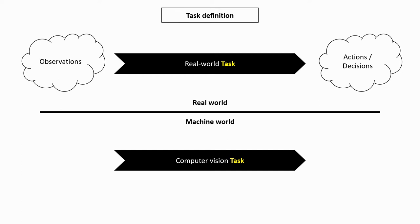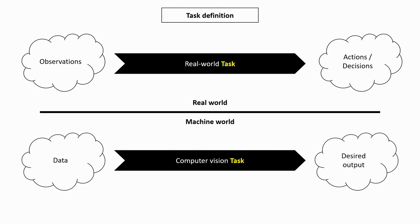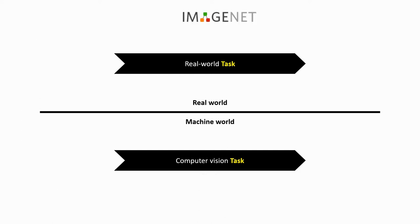So the computer vision task that an algorithm solves always has to be very precisely defined. This definition typically comes in the form of a relationship between input data and a desired output. This relationship is mathematical. Given a data vector x and a desired output y, a computer vision algorithm will provide a function f which attempts to accurately map x to y.